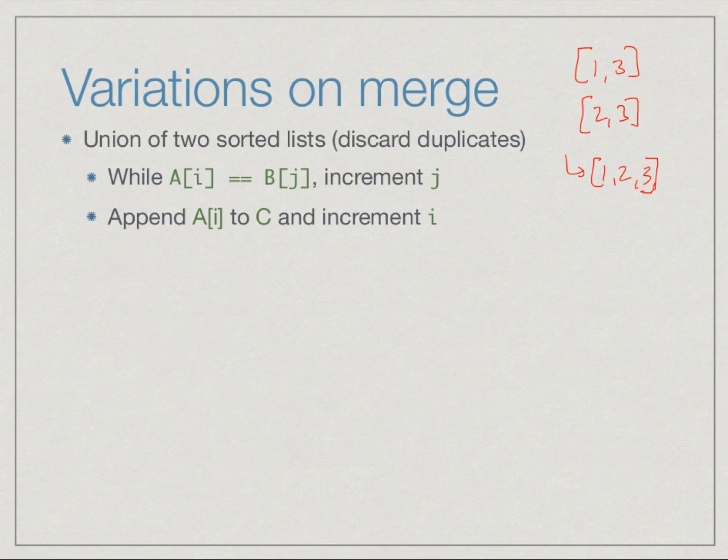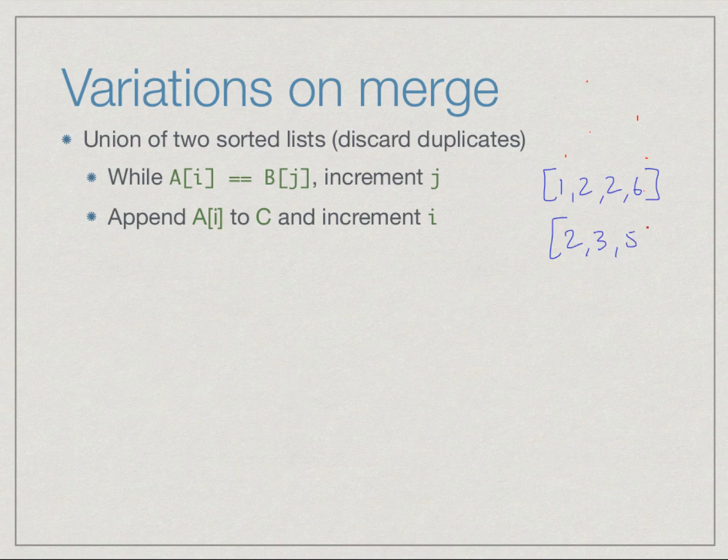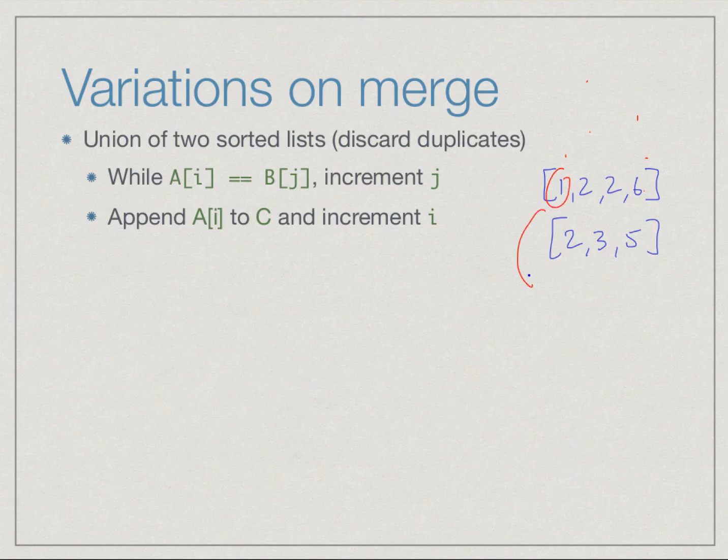On the other hand, we might want the union where we don't keep multiple copies, only one copy. In the union case, let us assume we have two lists with duplicates within the list. Suppose we have 1, 2, 2, 6 and 2, 3, 5. We do the normal merge, move 1 here, and when we hit two elements which are equal, we need to scan till we finish this equal thing and copy one copy of it.